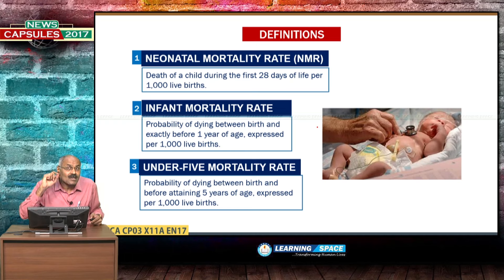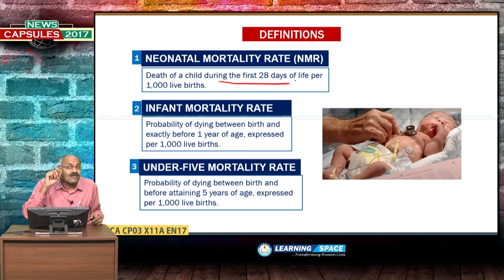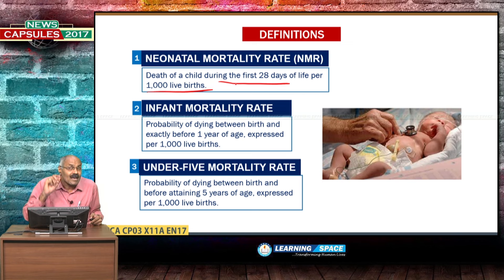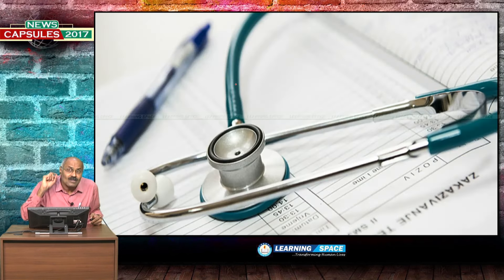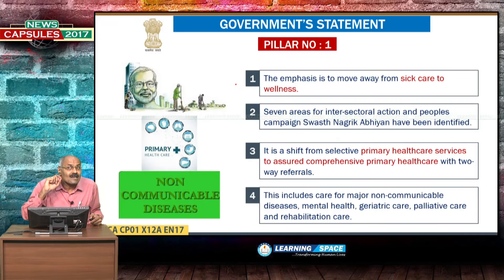Before going ahead, we must understand the definitions: neonatal mortality rate is the death of a child during the first 28 days of life per 1,000 live births; infant mortality is before reaching 1 year; under-5 mortality is before reaching 5 years. That concludes the first part — salient features.